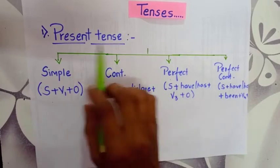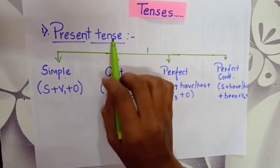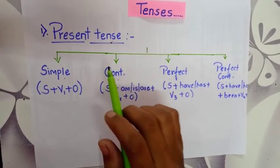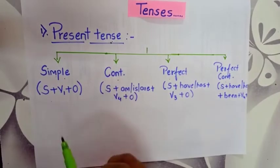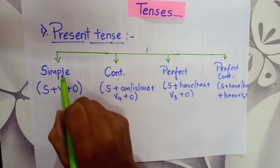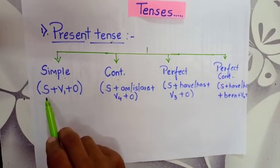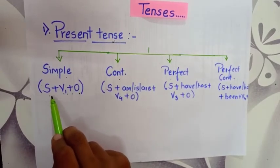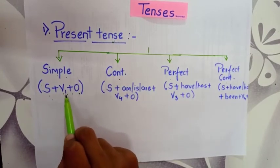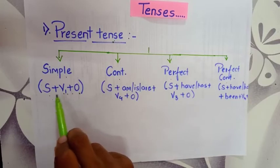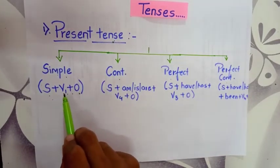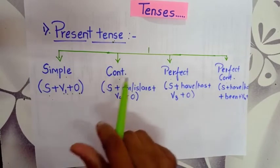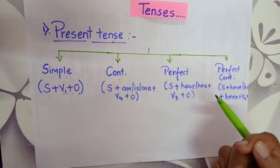Here are four different types of present tense: simple present tense, continuous present tense, perfect present tense, and perfect continuous present tense. For simple present tense, the formula is S plus V1 plus object. Here S is the subject, O is the object, and V1 is the first form — that is, a plain verb. I will first discuss all the formulas and what they mean, then explain through examples.